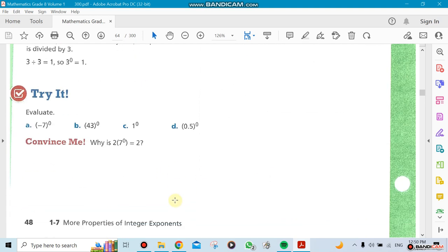Now let's see examples here. They're talking about negative 7 to the power of 0, 43 to the power of 0, 1 to the power of 0, 0.5 to the power of 0. All of those, the answer will be 1.